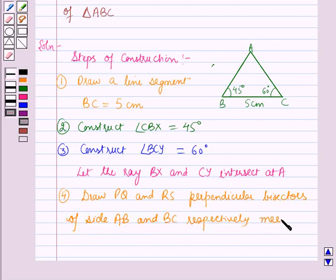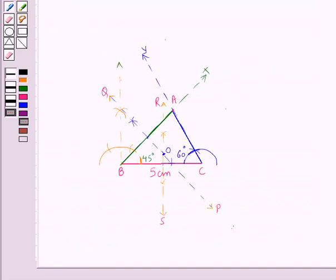Meeting each other at O. Now you can see here PT is the perpendicular bisector of side AB and RS is the perpendicular bisector of side BC, and both of them are intersecting at point O.